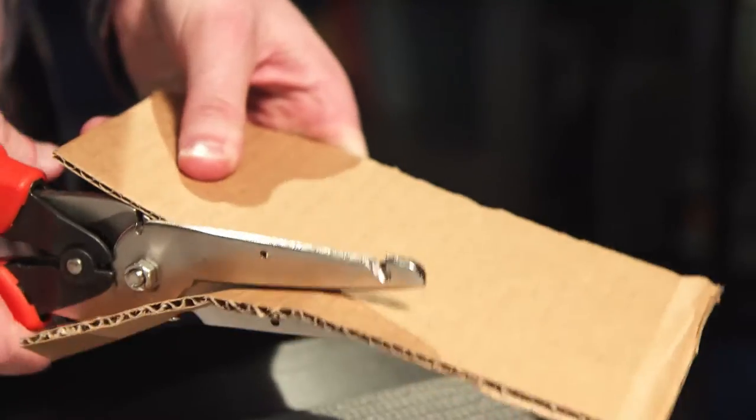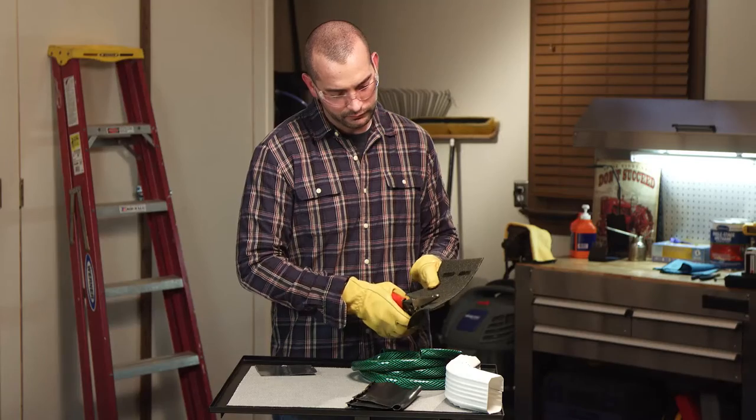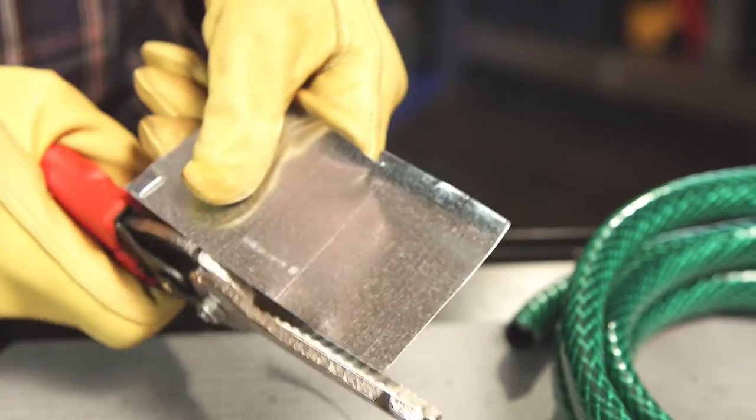Plastics, cardboard, rope, garden hose, even tough materials like shingles, leather, and sheet metal are no match for Max Cut.